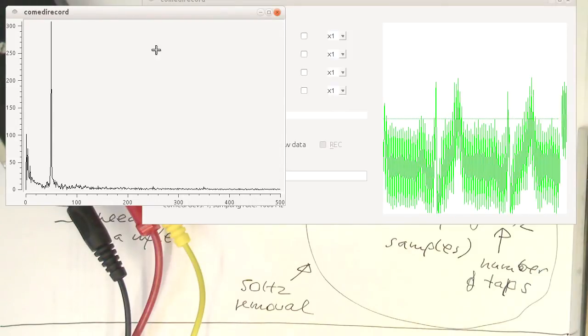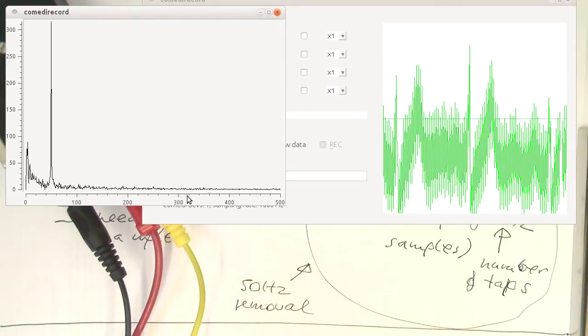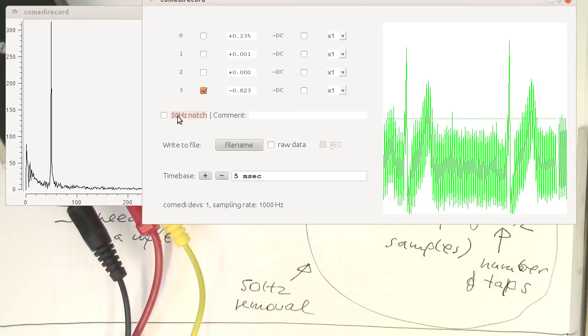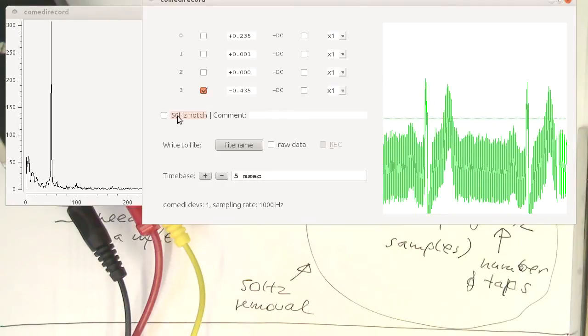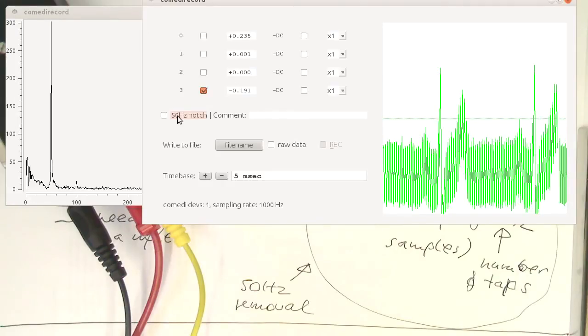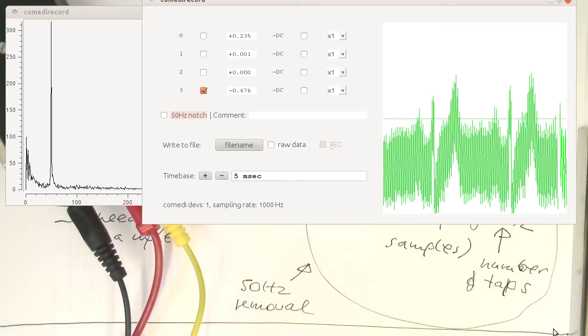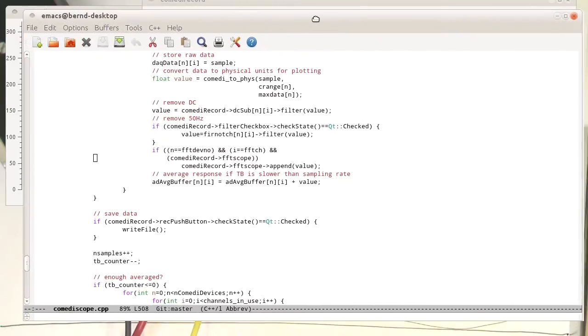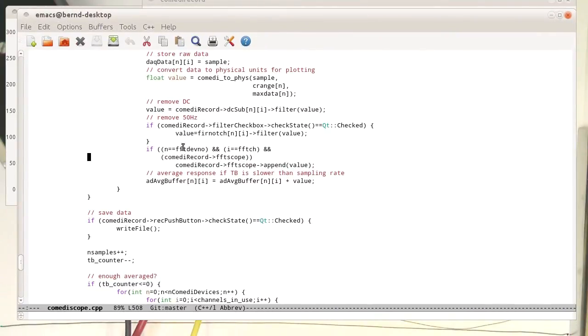And so now what I can do is in this program here, I can click this button here, which is called 50 Hertz notch, and then this removes this instantly. So before I do that, just to increase the tension a bit more, I just pull the relevant code bit here on the screen.